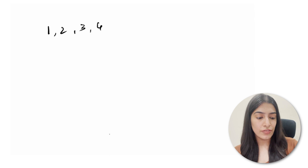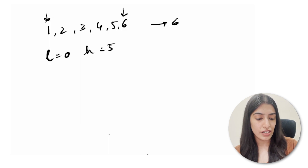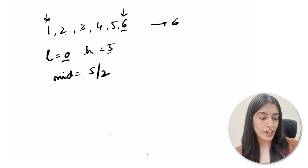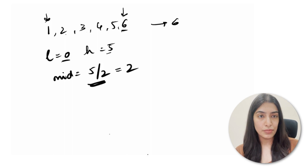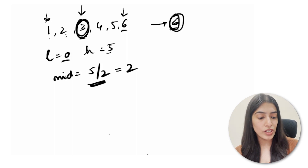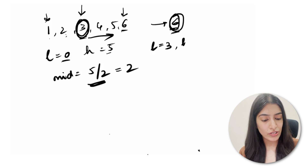Let's dry run with the array [1, 2, 3, 4, 5, 6], searching for element 6. Lower is 0, higher is 5. In the while loop, l=0 ≤ h=5, so we find mid = 5/2 = 2. Element at index 2 is 3. Since array[mid]=3 is less than 6, we know 6 is on the right side, so we move l to mid+1 = 3, keeping h at 5.